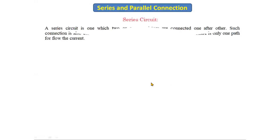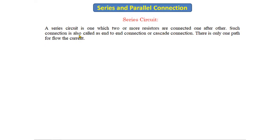Now let's see what is a series circuit. A series circuit is one in which two or more resistors are connected one after another. Such a connection is also called an end-to-end connection or cascade connection, and there is only one path for the current to flow. In series connection, the current will not divide — current is same throughout the circuit.